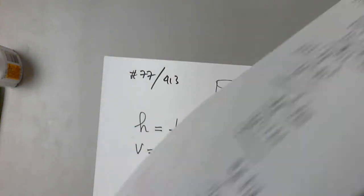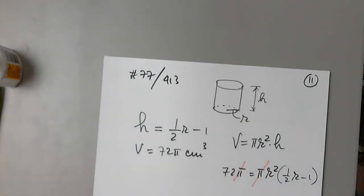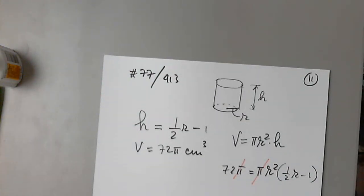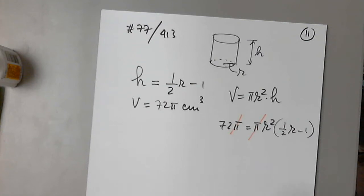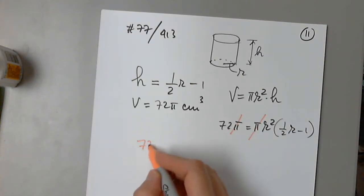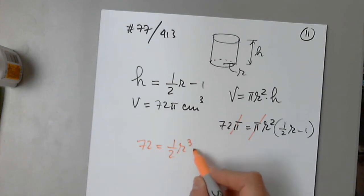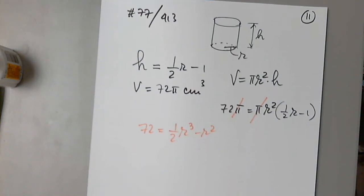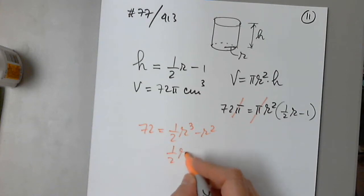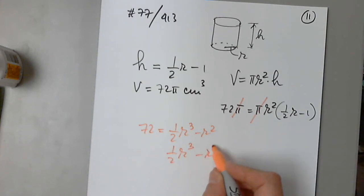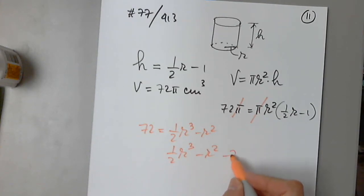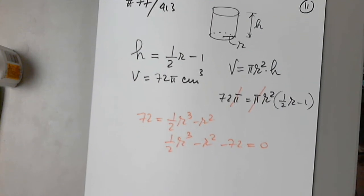First of all, I will divide both sides by pi. And then I have 72 equals, and I will distribute: one half r cubed minus r squared. Then I have one half r cubed minus r squared minus 72 equals 0.